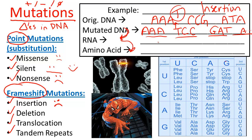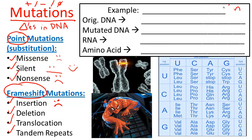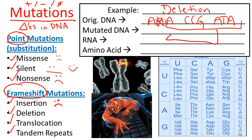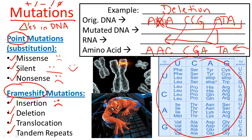The same goes for a deletion mutation. If we delete one letter from the original sequence A-A-A-C-C-G-A-T-A — say we delete one of the A's — this entire frame shifts to the left. Now the codons read A-A-C-C-G-A-T-A and so on, completely offset. These do not code for the same amino acids. The resulting protein is definitely not what the body intended to make. Deletion is seriously bad.